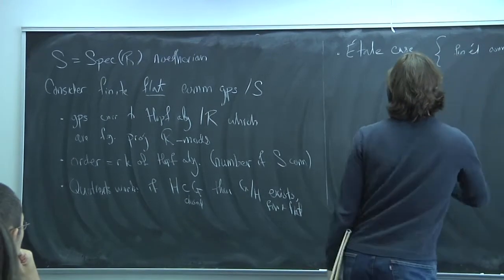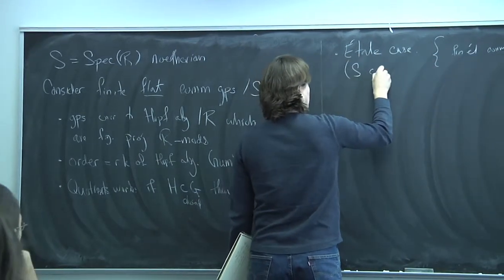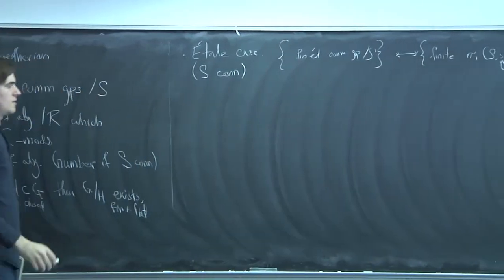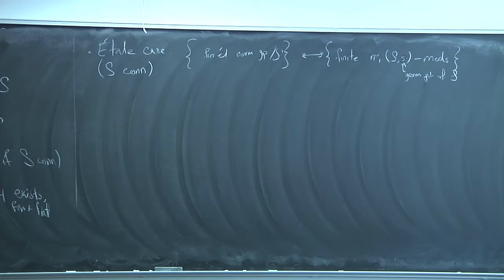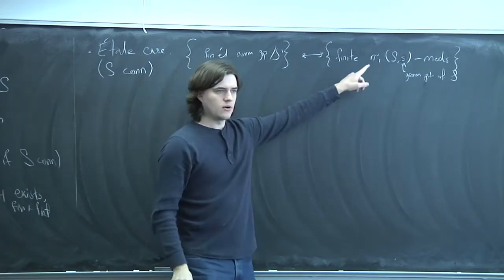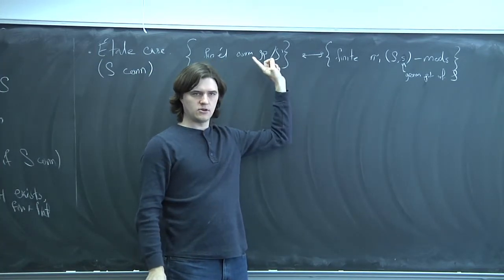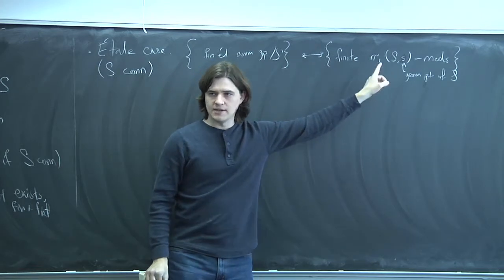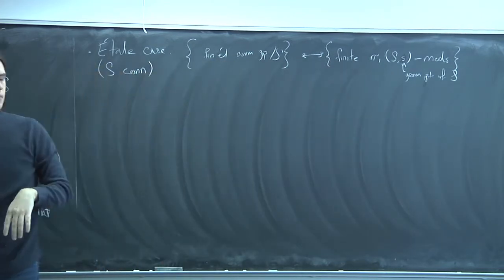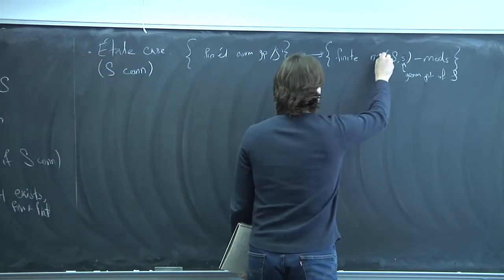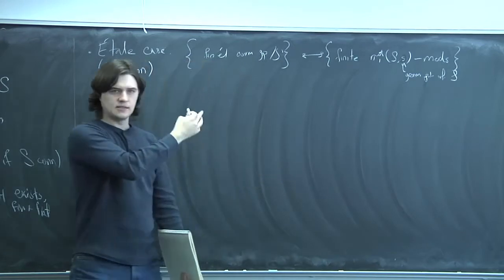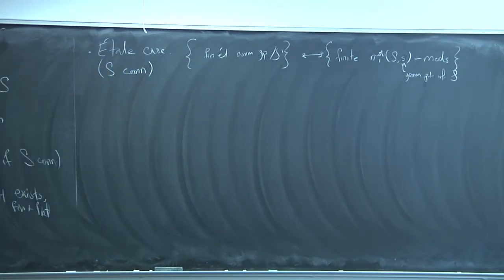This is the case where S is connected. If S were a field and k-bar were a field, then this π₁ would just be the opposite Galois group — the étale group schemes over a field correspond to modules for the Galois group. If S is the ring of integers in an extension of Q_p, then this π₁ is the unramified Galois group, so you get representations which are unramified.